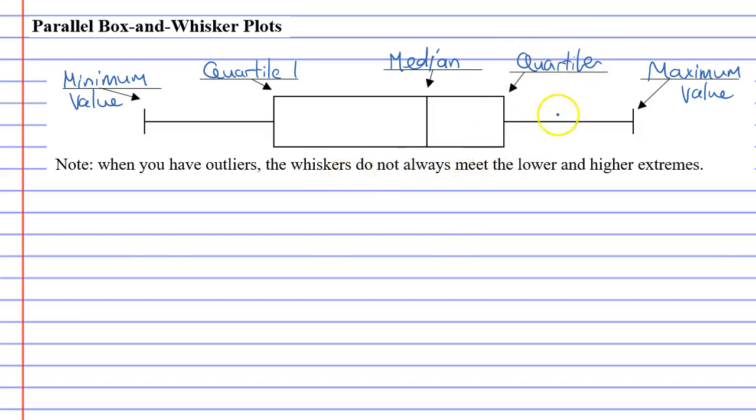I also want to point out that these lines are called whiskers. The whiskers join the maximum and minimum value, and then the rectangle in the middle is called the box.